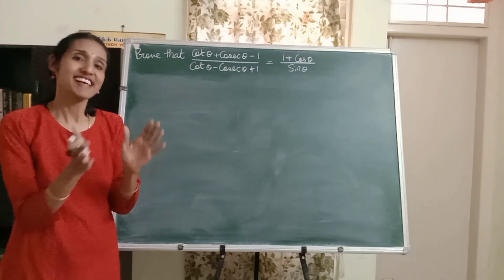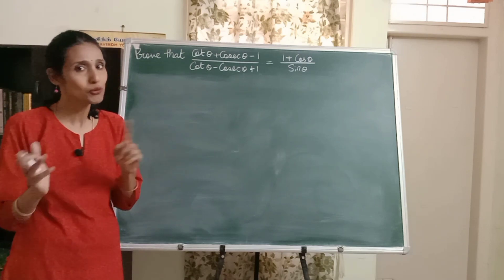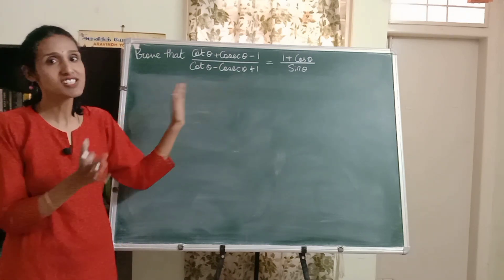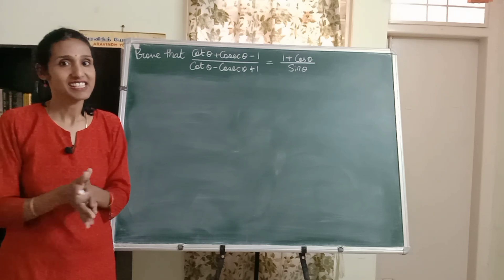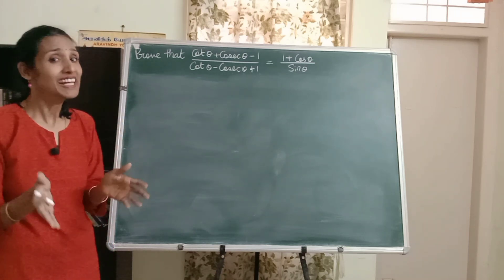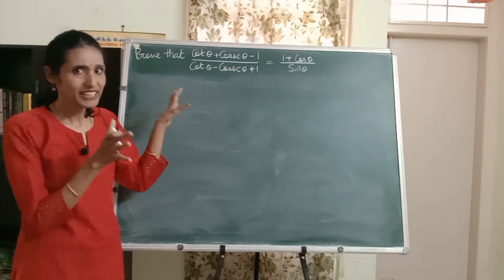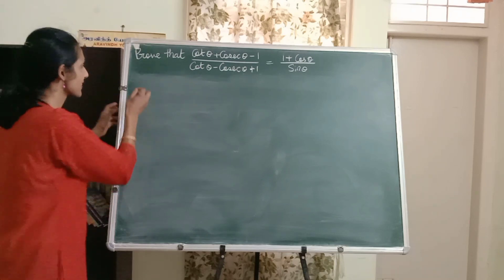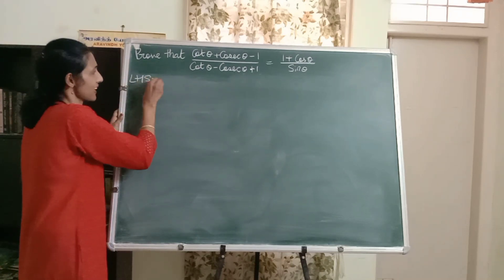So what do we do here? Either you start with the LHS and prove that it's equal to RHS, or you start with the RHS and prove that it's equal to the LHS. So which side do we start with? I think it's better if we start with the LHS because that looks more complicated. Always start with the more complicated side, friends.